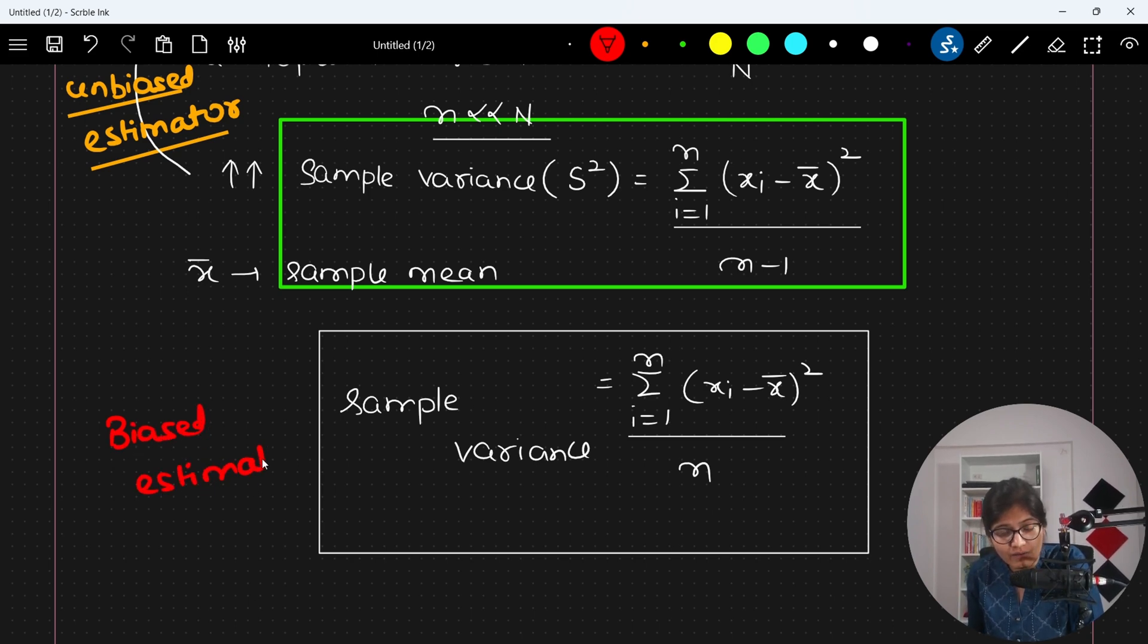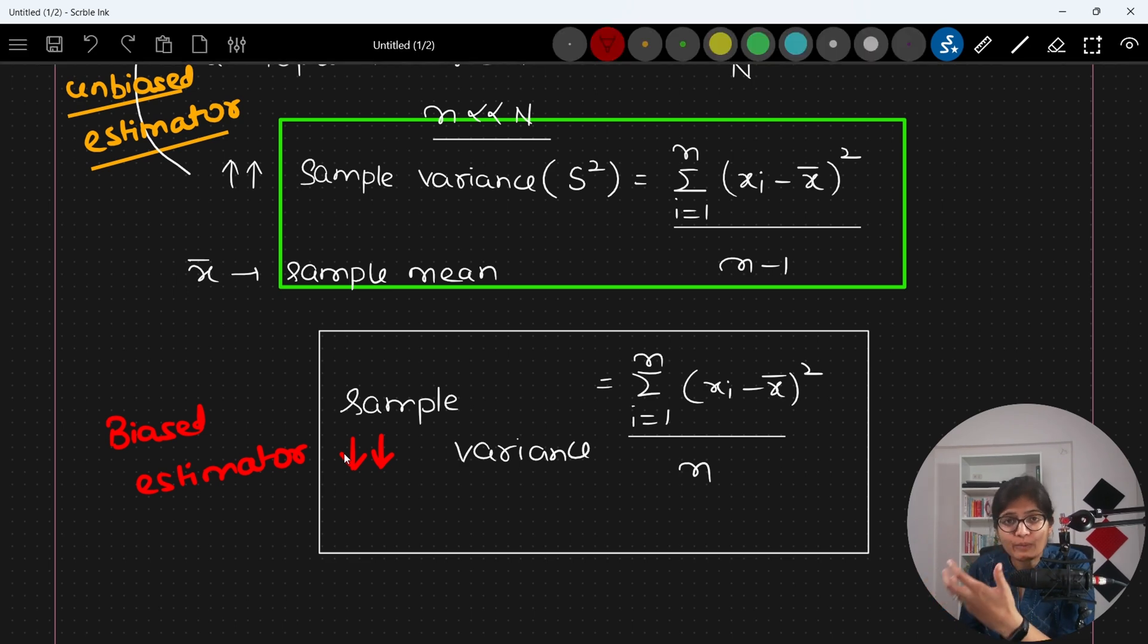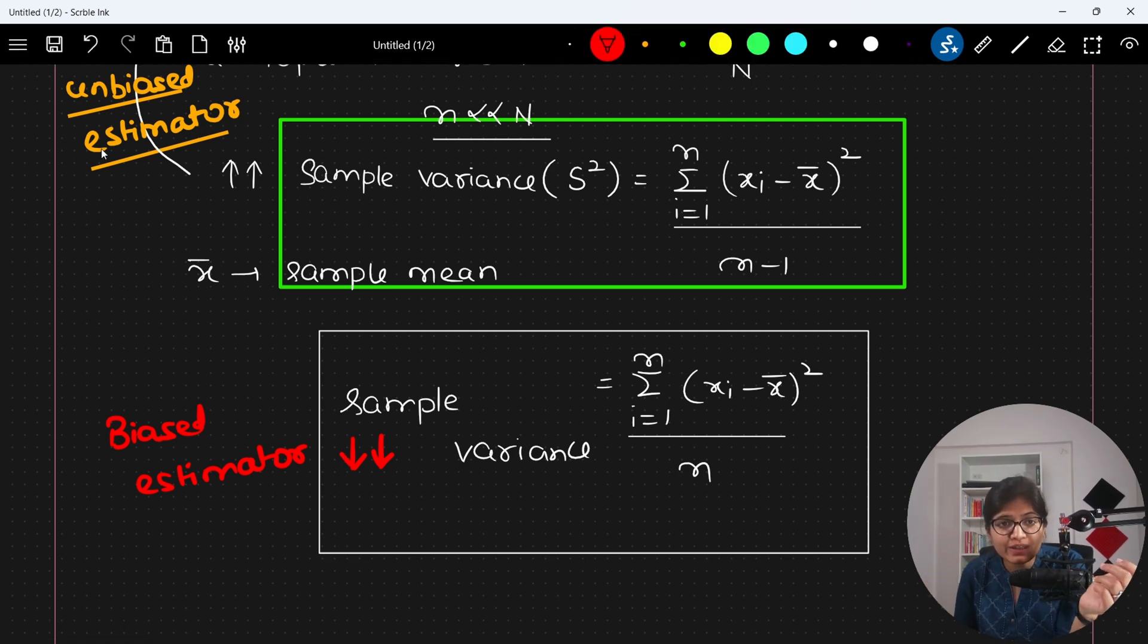And here, our value of sample variance is quite low, which is not matching towards the population variance value. And in our experiment, in our whatever research we are doing, what we want as a sample, we want something which is unbiased estimator, not the biased one.